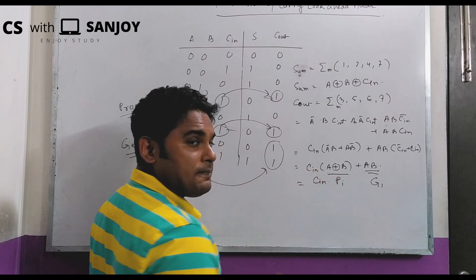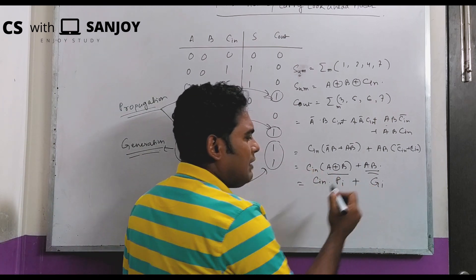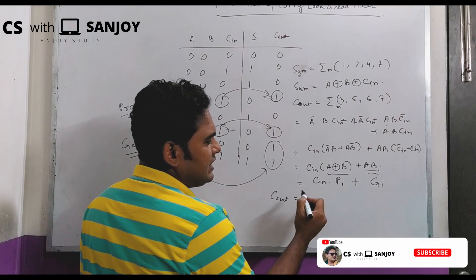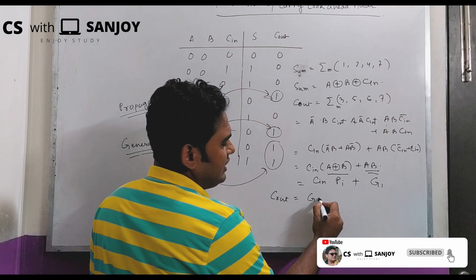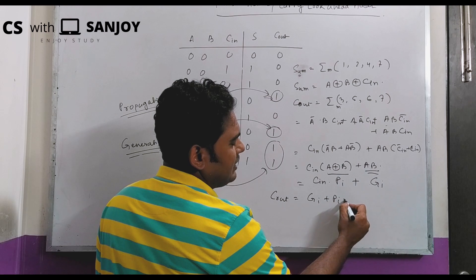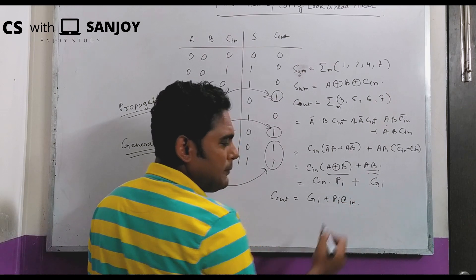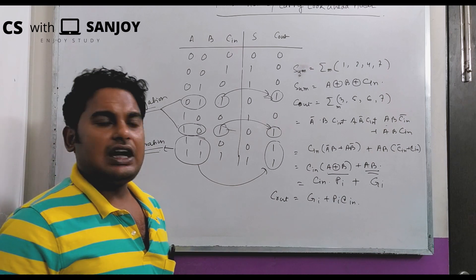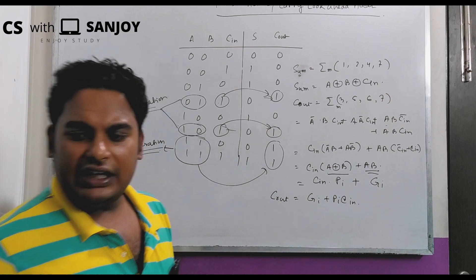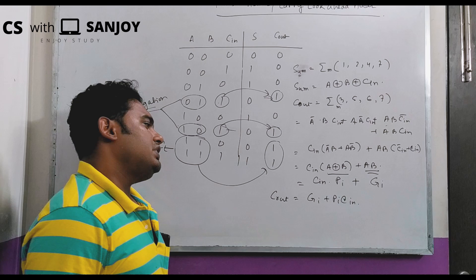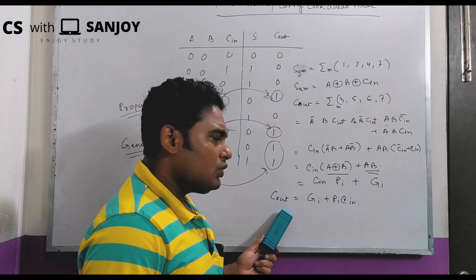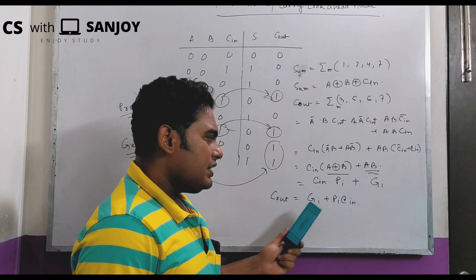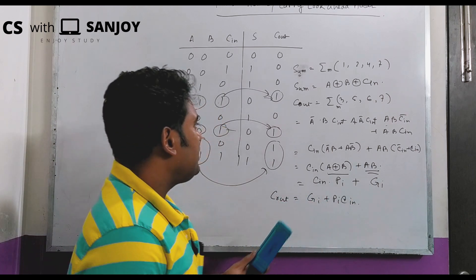The carry out function is: C_out equals G_i plus P_i times C_in. Here C_in is the previous stage carry and C_out is the current stage carry. So C0 gives C_out 1, C1 gives C_out 2, and C2 gives C_out 3.